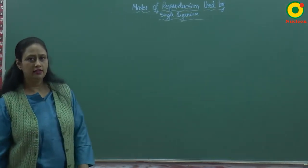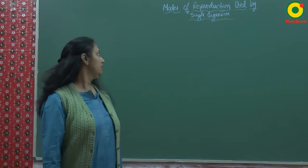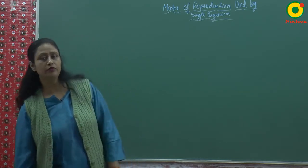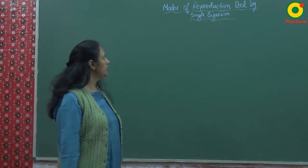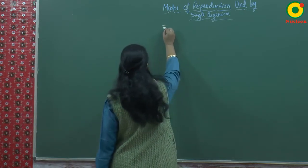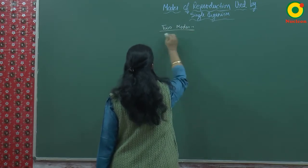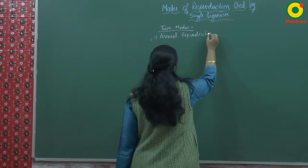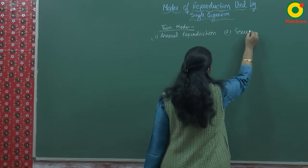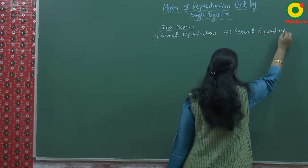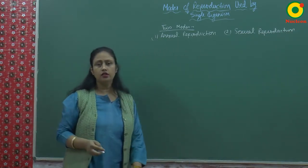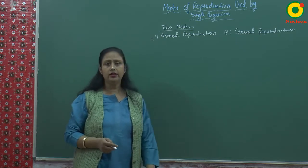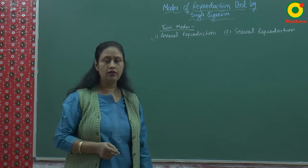Hello students. The next subheading under the topic 'How do organisms reproduce' is modes of reproduction used by organisms. Basically, there are two modes of reproduction mainly: first is asexual reproduction, and second is sexual reproduction. Asexual reproduction generally occurs in lower forms like protozoans and coelenterates, but it is absent in almost all invertebrates and all vertebrates.